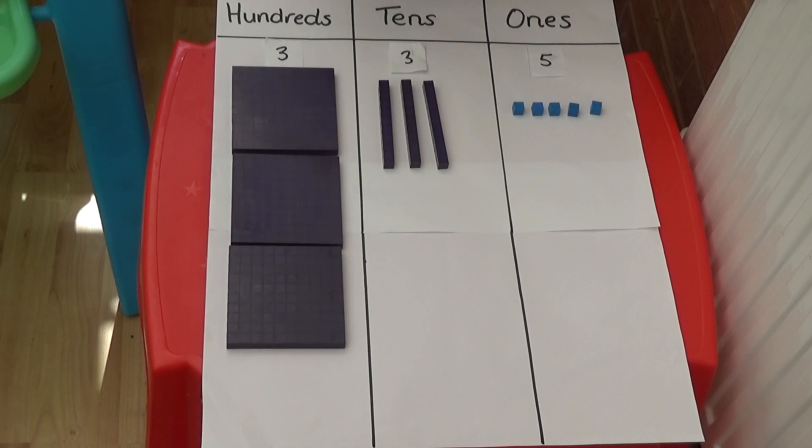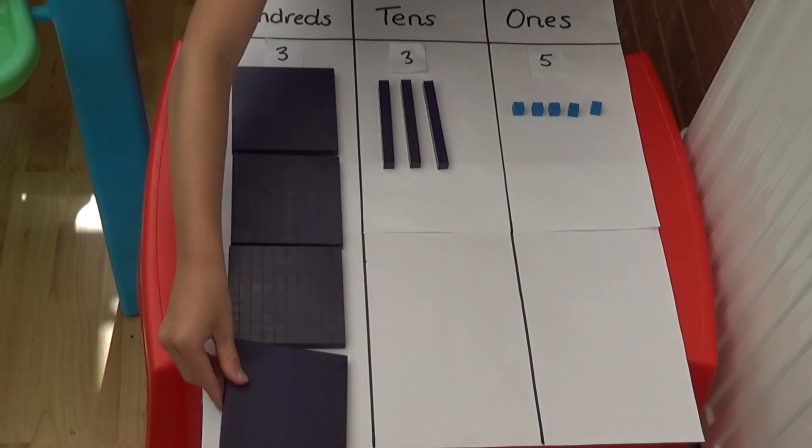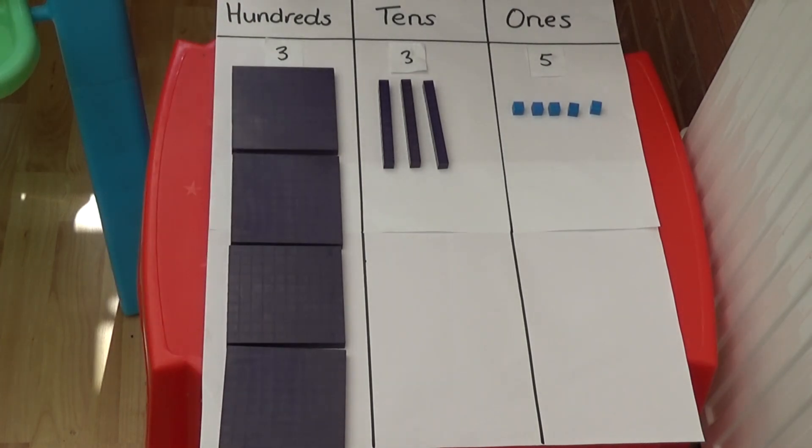To add 100, I need another 100 square. So my number now is 435.